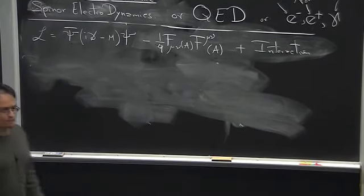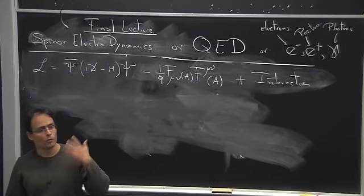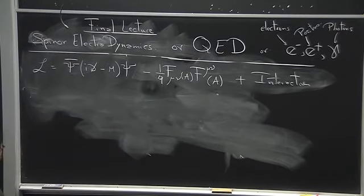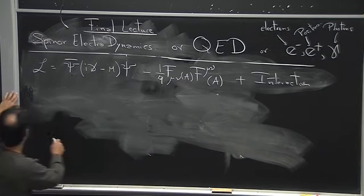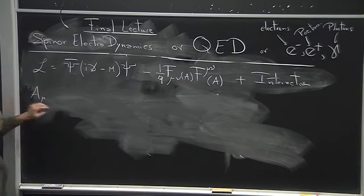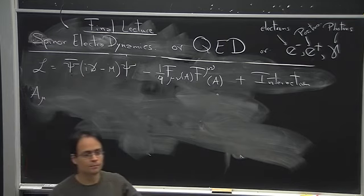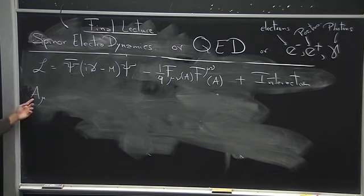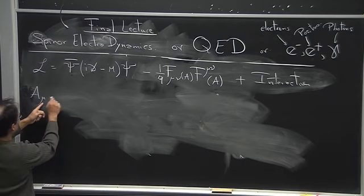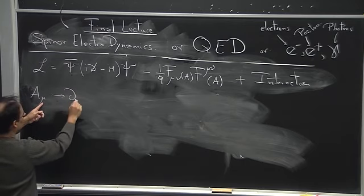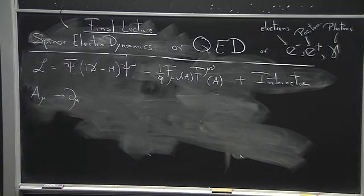What was the trick we used when we had the complex scalar field? We want to find an interaction between A_μ and our spinor fields. We want an interaction with the smallest possible dimension of the coupling. A_μ transforms like the derivative operator — as a one-form — and we want to make a Lorentz scalar.